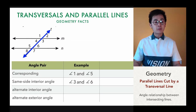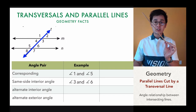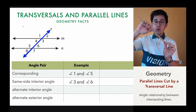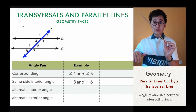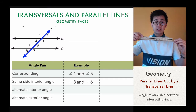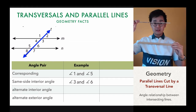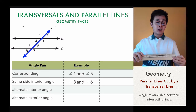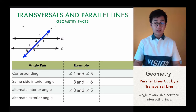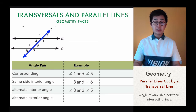For the third relationship, we have the alternate interior angle. From the keyword itself, alternate means one of the angles is on one side of the transversal and the other is on the other side. Since it says interior angle, it means they're inside the parallel lines. Examples of alternate interior angles in this diagram are angle three and angle five, and angle four and angle six.